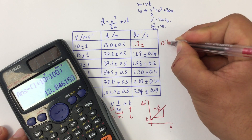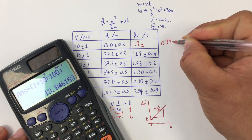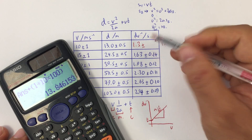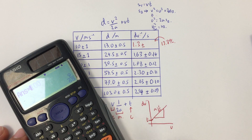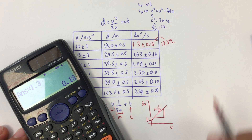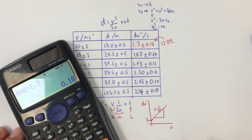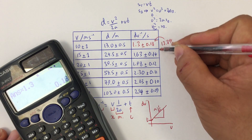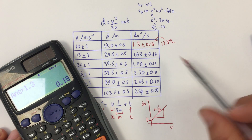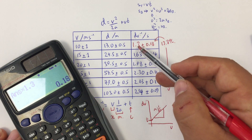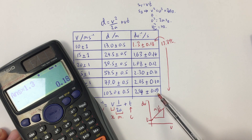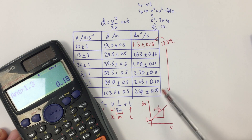To work out the absolute uncertainty, I need to find what 13.8% of 1.3 is. Divide by 100, turn it into a decimal, times it by 1.3, and we get 0.18 as our absolute uncertainty. Just note that the percentage uncertainty is always the same throughout, but because the value of d divided by v is increasing, the absolute uncertainty is being reduced.